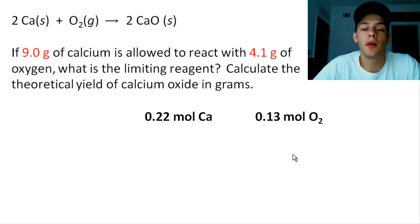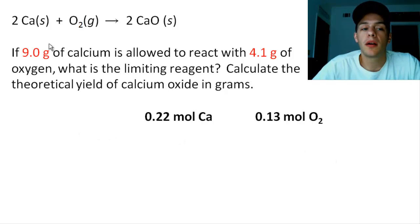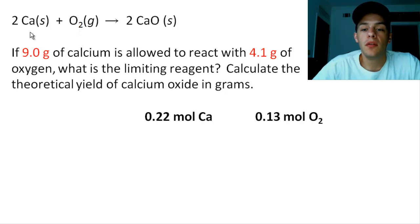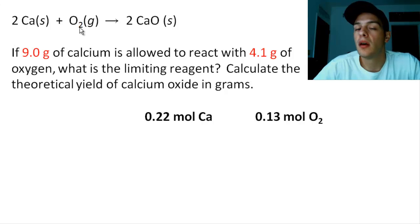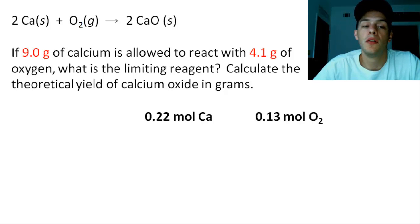Looking at these two amounts, you might be tempted to say we have a smaller amount of oxygen by moles, so oxygen must be our limiting reagent. But this isn't necessarily true because the balanced equation says we need two moles of calcium for every one mole of oxygen. Even though we have less oxygen than calcium, we need twice as much calcium for a given amount of oxygen to make this reaction go.